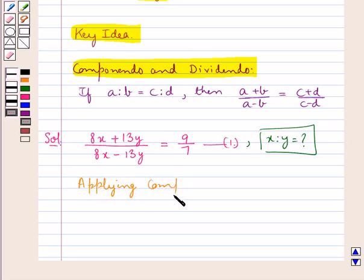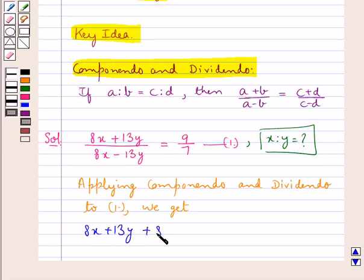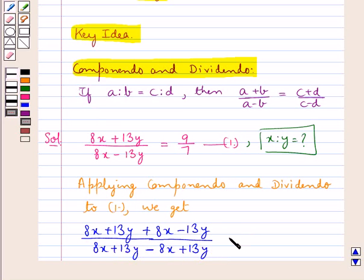So applying componendo and dividendo to result 1, we get 8x plus 13y plus 8x minus 13y upon 8x plus 13y minus 8x minus 13y is equal to 9 plus 7 upon 9 minus 7.